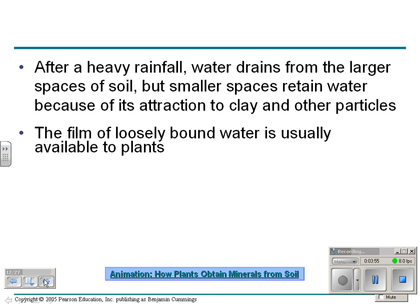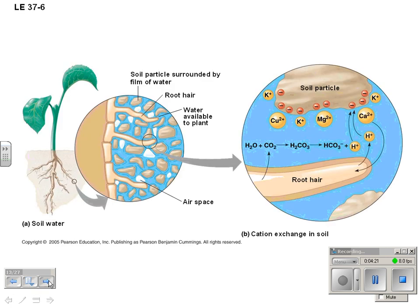After rain, water drains from the larger spaces of soil, but smaller spaces retain water because of hydrogen bonding — it's attracted to clay and other particles because they have different charges. This film of loosely bound water is what plants take up in their roots, as we already discussed in Chapter 36. Here's the root hair and all the soil particles, and then the water that can be taken up by plants.